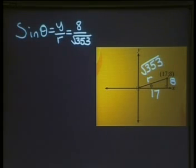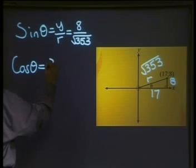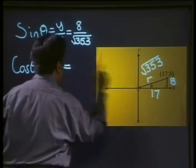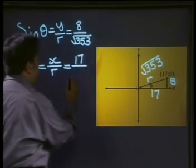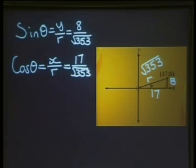let's move on to cos. Cos of theta is equal to x divided by r, and our x is 17, and that will be divided by r, which is, again, the square root of 353.